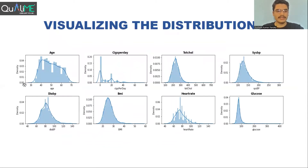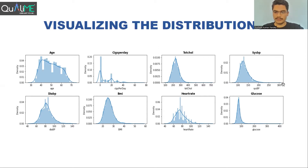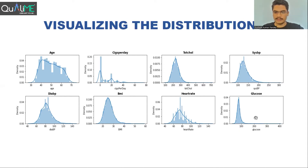After that, we started visualizing the distribution of all the features. The distribution of age, cigarettes per day, and total cholesterol shows a bell-shaped curve, however it is slightly skewed towards the right. Similarly, systolic BP is also showing a near-normal distribution but slightly right-skewed. The same goes for diastolic BP and BMI. Heart rate is also a little skewed. Glucose is very much skewed towards the right — it looks like there are many outliers in that region.